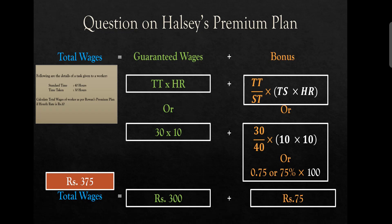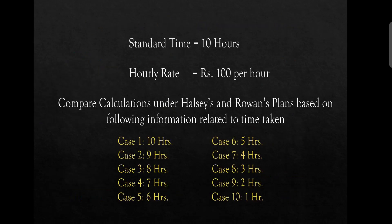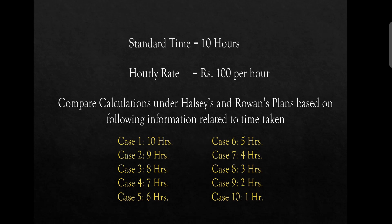So the similarity in guaranteed wages between Halsey and Rowan is that both use time saved multiplied by hourly rate in the bonus calculation framework — the difference is the proportion. To compare both plans — Halsey's plan and Rowan's plan — let's take a small numerical question for the sake of exemplifying the comparison. Standard time is 10 hours, hourly rate is 100 rupees. The first objective is to compare them with our conceptual background, and the calculations will demonstrate the difference.